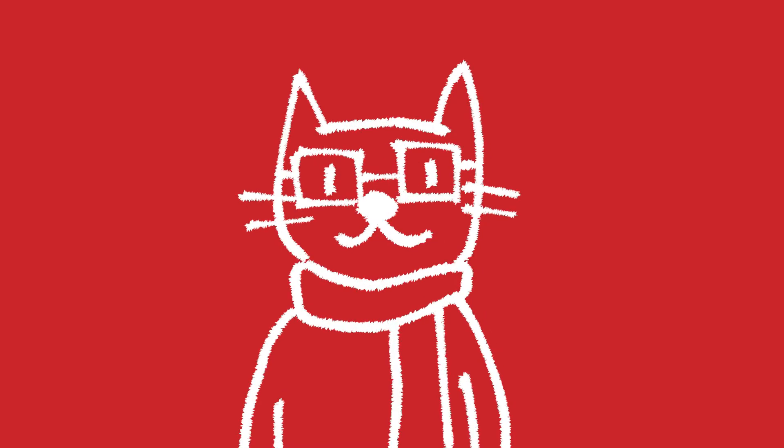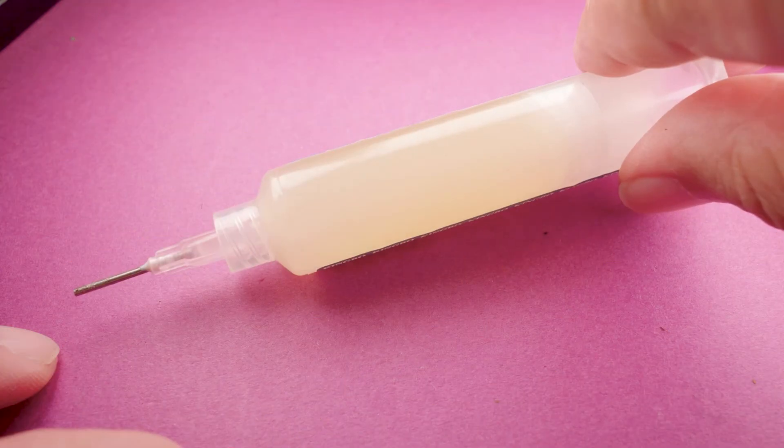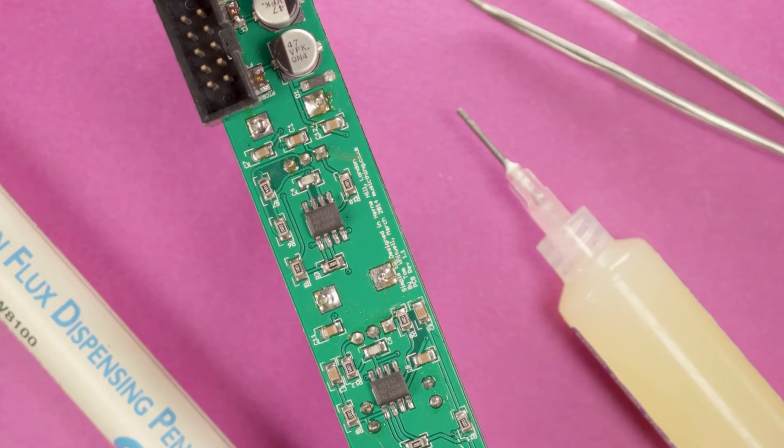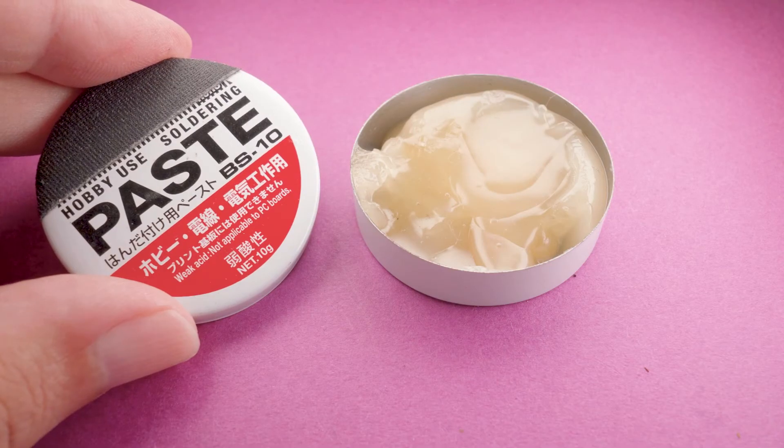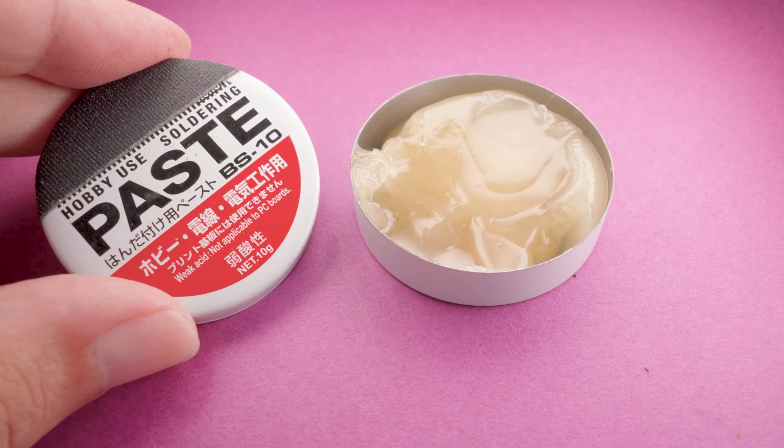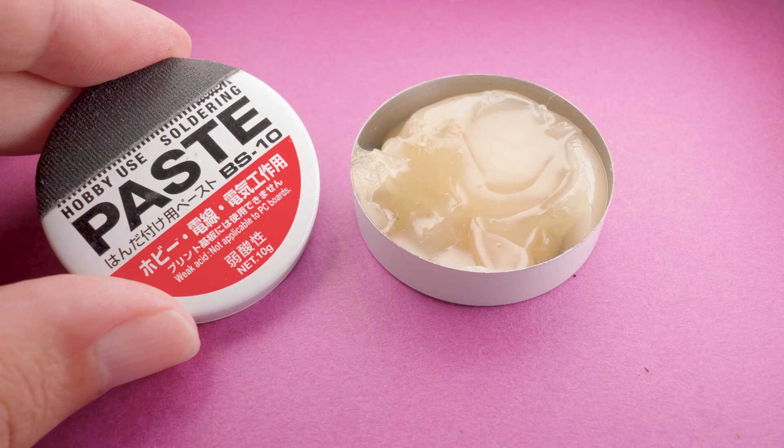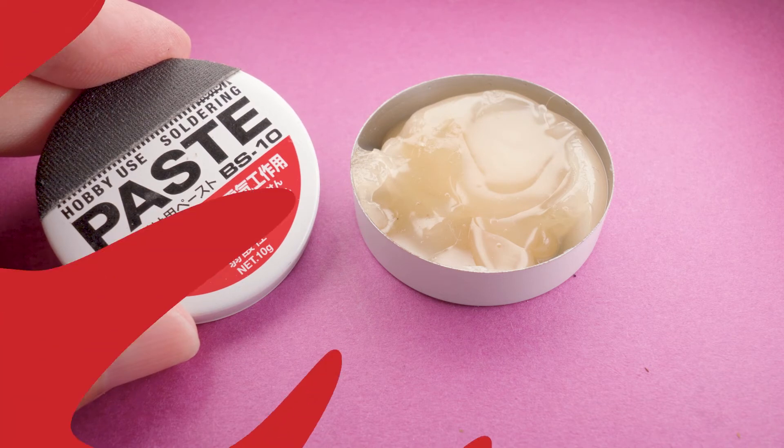Now, these days you don't really need to buy flux separately if you're doing through hole. If you're doing SMD type work, then yes, you should probably buy some flux. It usually comes in this tube and it just really helps soldering in SMD chips. Stay away from these tins that have flux inside of it. It's mildly acidic and it will slowly destroy the traces on your PCB.